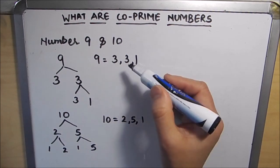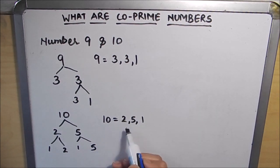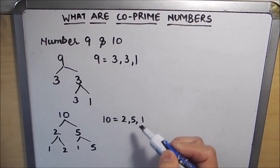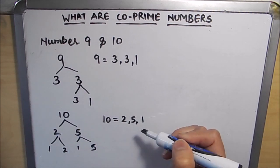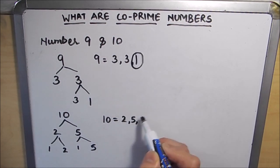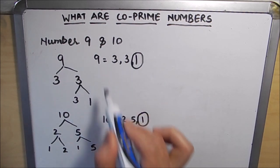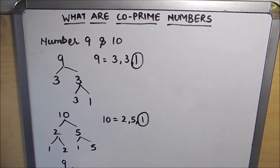So now we see factors of 9 are 3, 3, 1 and factors of 10 are 2, 5, and 1. So in these two factor trees or in these two numbers, there is only one common factor which is number 1. So the only common factor between 9 and 10 is 1. So 9 and 10 are called co-prime numbers.